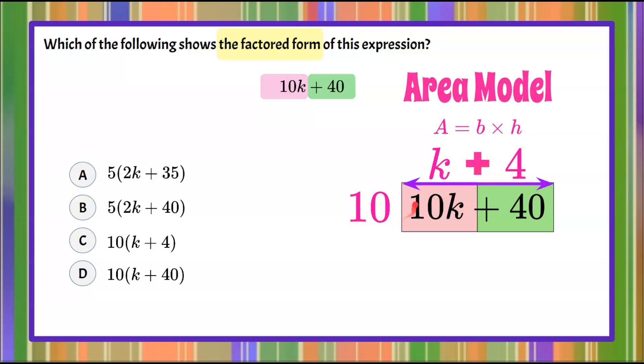So if I rewrite this to be base times height, I have 10 multiplied by the other side, k plus 4.